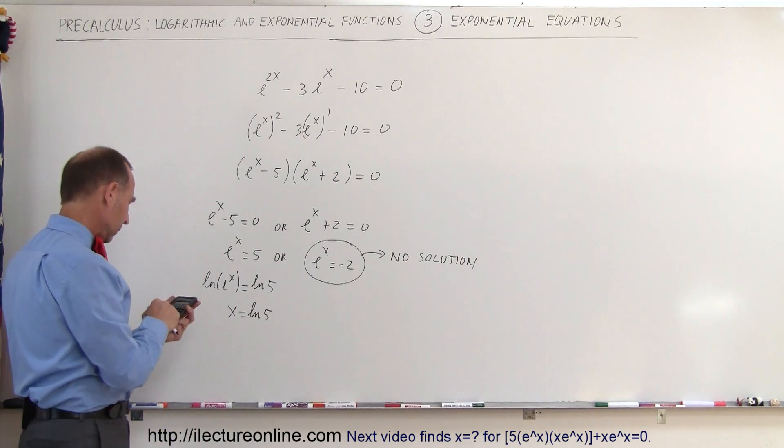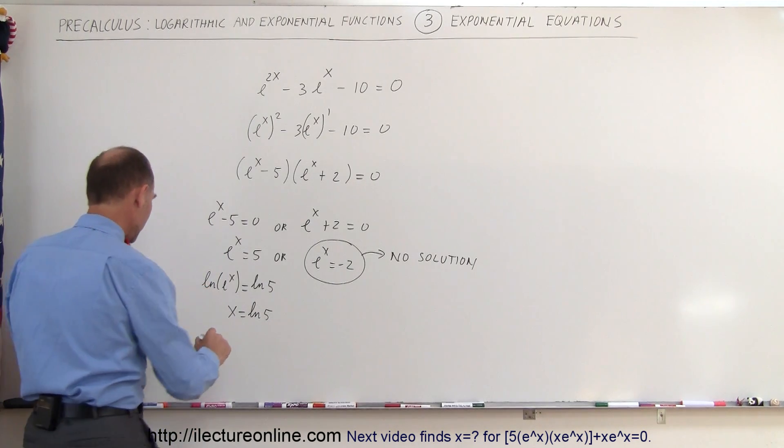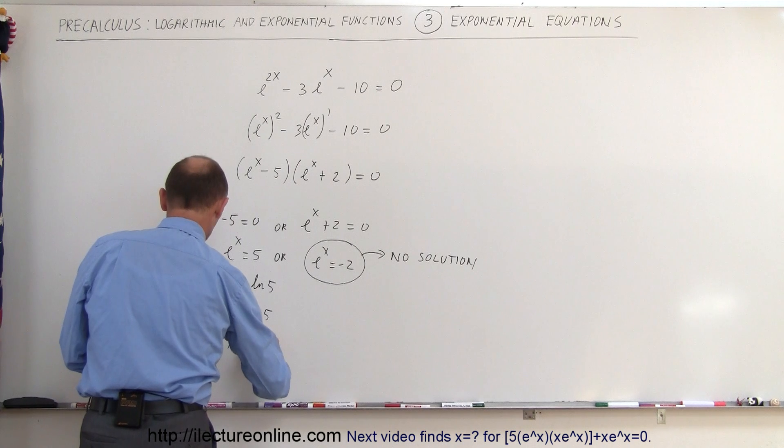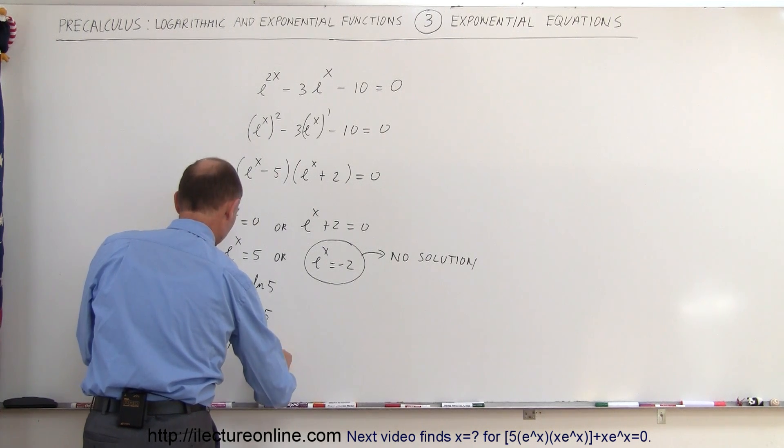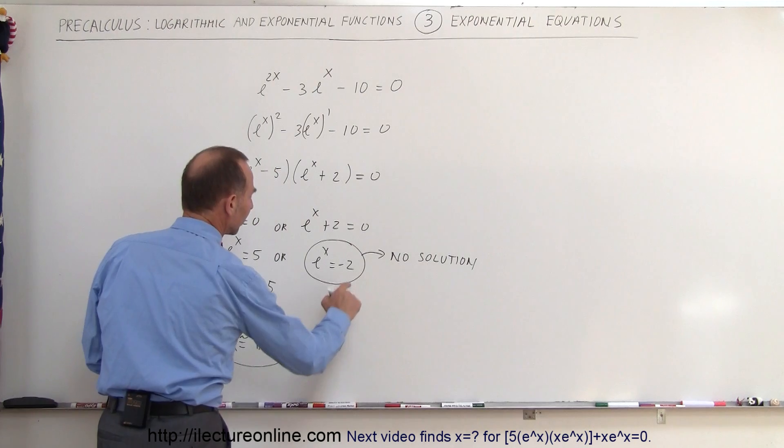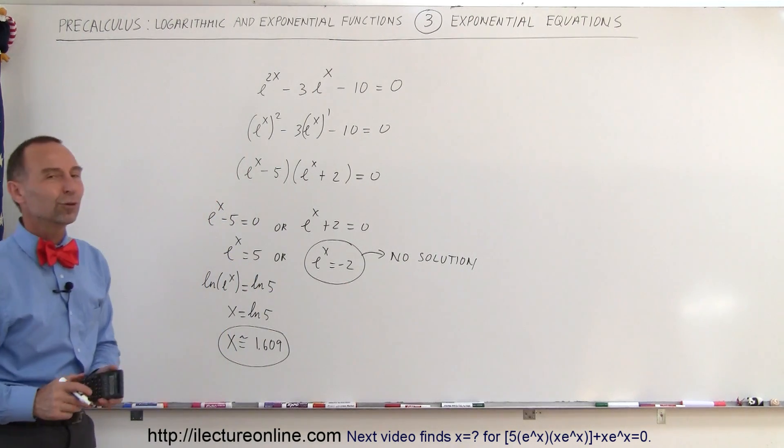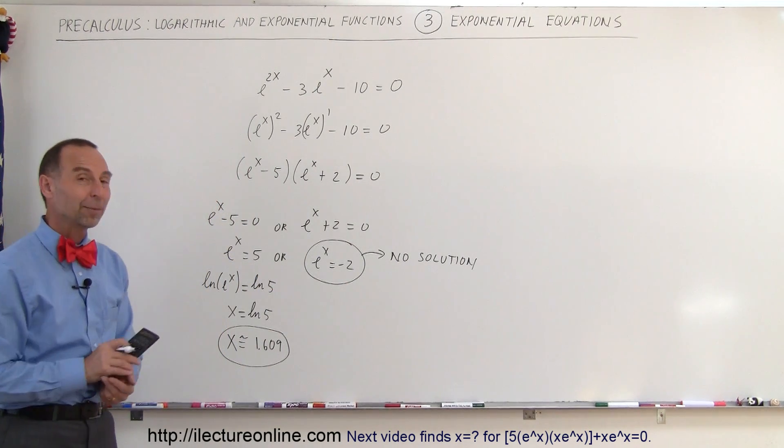And then if we get a calculator, we get 5, take the natural log—that means that x is approximately equal to 1.609 to 3 decimal places. This does not offer a solution. That's how you do a problem like that.